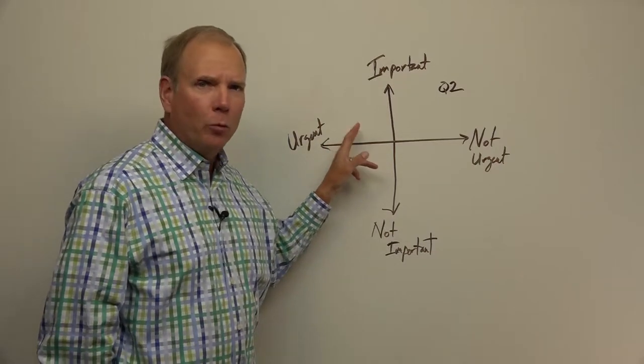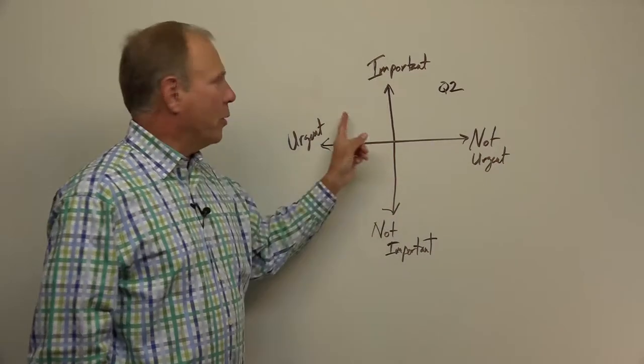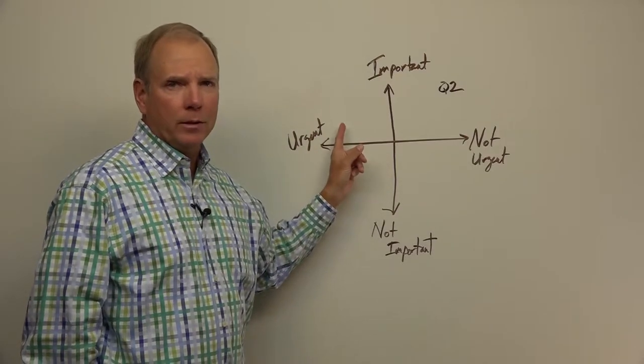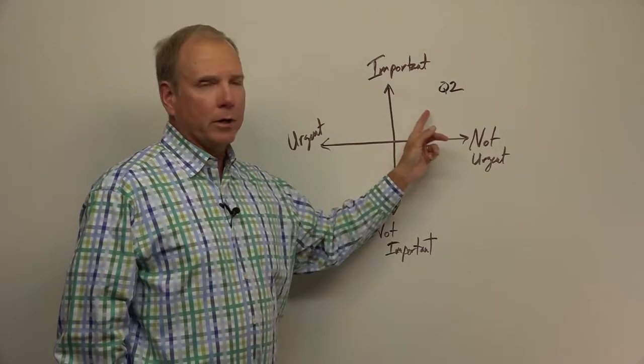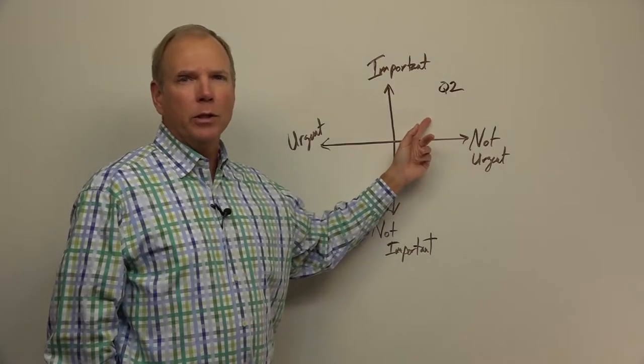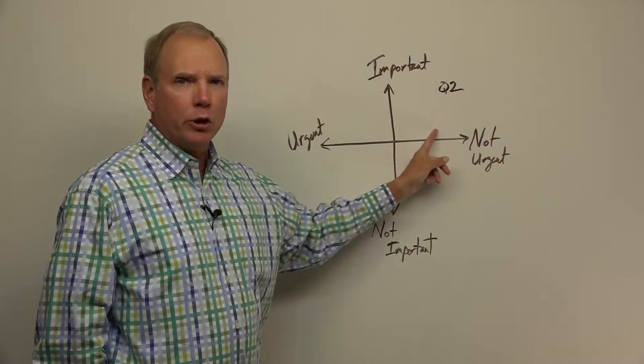Clearly there are urgent and important things you need to do. If your phone rings and your home is on fire, you're going to go there. That is urgent and important. There is no time to waste. But leaders, according to both Eisenhower and Covey and all the other wisdom writers, spend a good bit of their time in quadrant two.